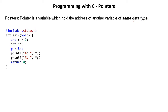Pointer is a variable, just like if I type 'int a', then 'a' is a variable of integer type. Similarly, if I type 'int *p', then p is also a variable. Pointer is not different from any other variable — pointer is also a variable. But the main difference is that a pointer holds an address.